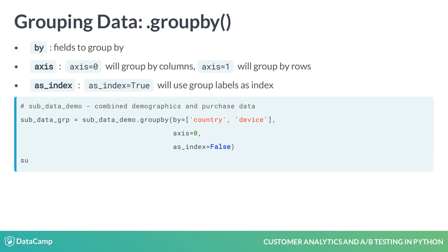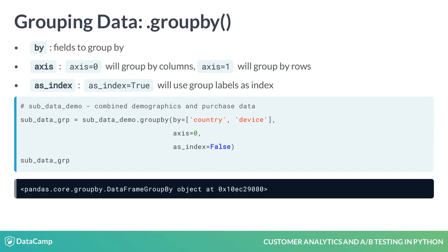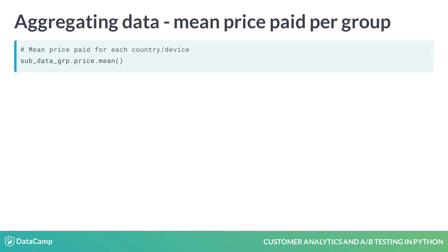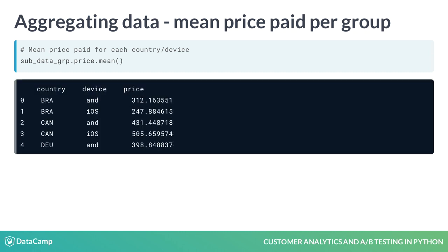This returns a DataFrameGroupBy object. The next step is to aggregate over these groups. The easiest way to do this is to call an aggregation method on the DataFrameGroupBy object. Let's call mean on the price value of our data frame. The output is the mean amount paid per subscription across all purchasing users, calculated over each device-country combination.